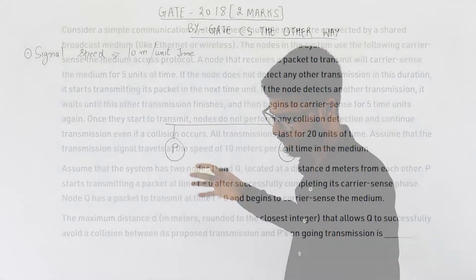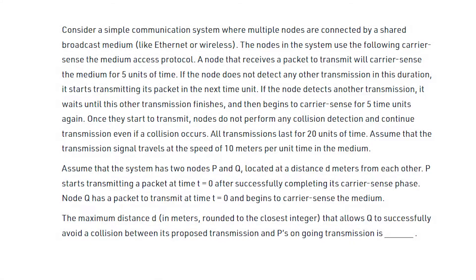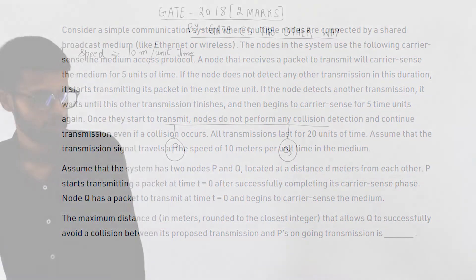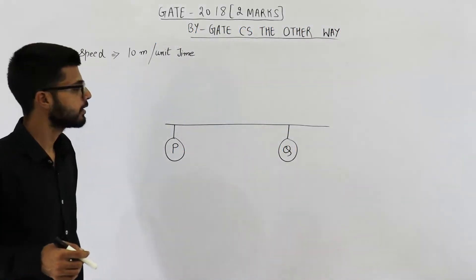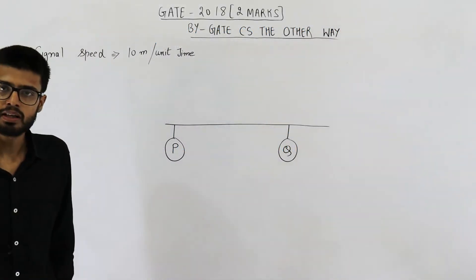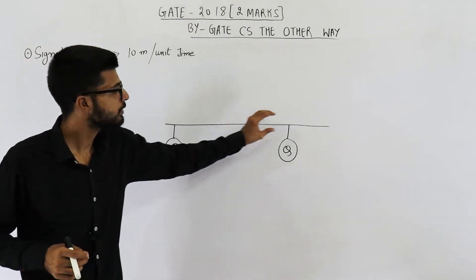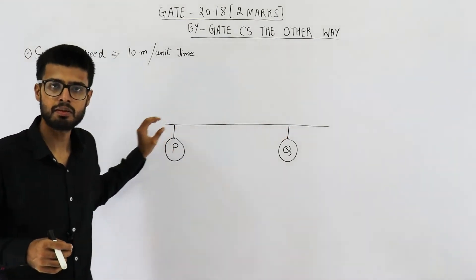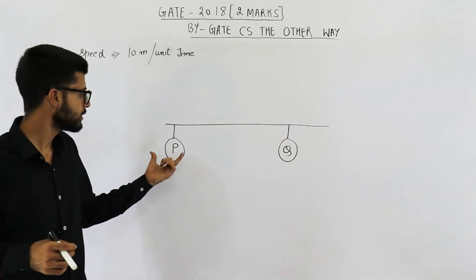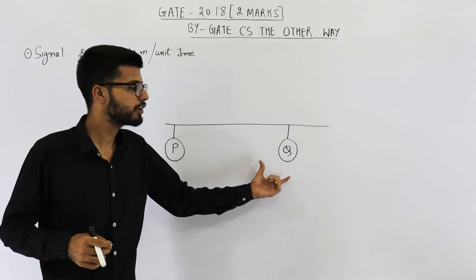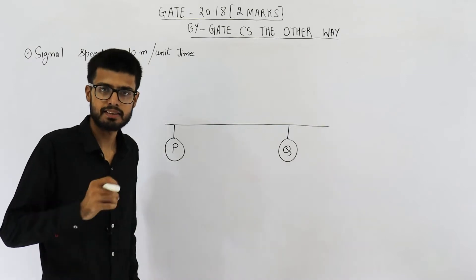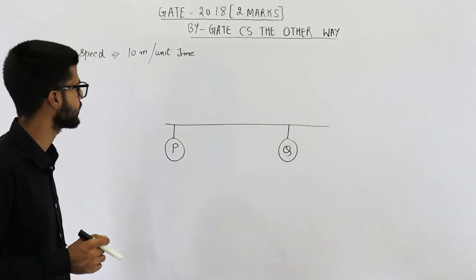I'll display an image of the question which you can read if you want. In a simple computer network, a common shared medium is used. That means each and every node will sense the channel before sending any data.